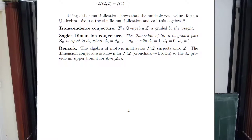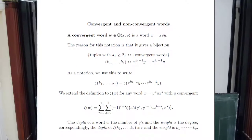We did hear in a previous talk about motivic multiple zeta values. In a sense, motivic multiple zeta values are objects which have certain properties, satisfy certain relations, and surject down onto these multiple zeta values. And these dimensions are known for the motivic multiple zeta values—you've probably heard that in the previous talk by Brown. So at least it's known that this is an upper bound.